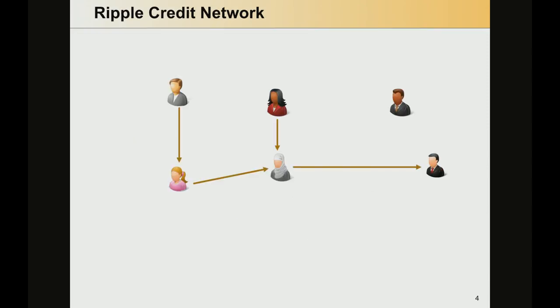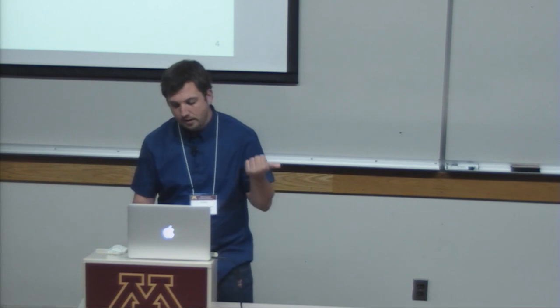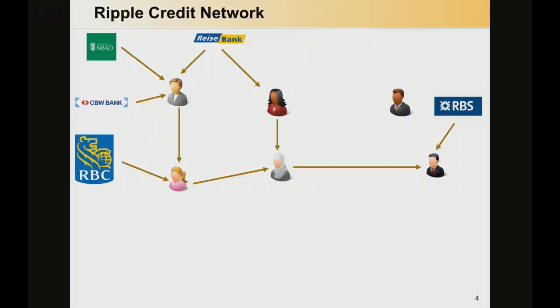The Ripple network has gained importance as an interesting alternative because the nodes in the network represent not only users but also banks all around the world. We have examples in Canada, here in the US, also in the UAE, in Germany, in Scotland. These are only a few examples — there are many of them, actually.